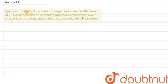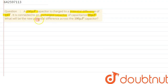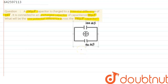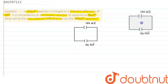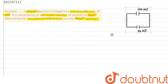We are given a question which says a 100 microfarad capacitor is charged to a potential difference of 24 volts. It is connected to an uncharged capacitor having capacitance value 20 microfarad. What will be the new potential difference across the 100 microfarad capacitor? From the given diagram we can see we have two capacitors.